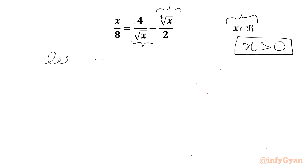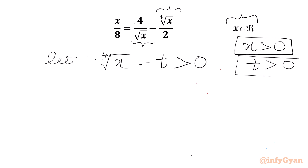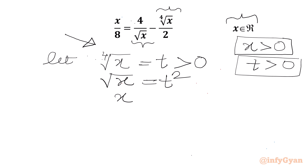Now we can consider our substitution. Let 4th root of x equal to t. So 4th root of x will always be positive, so t must be positive. Squaring both sides gives square root x equal to t squared. Squaring again gives x equal to t to the power 4.